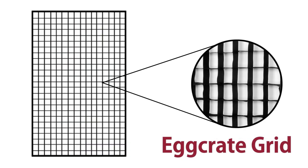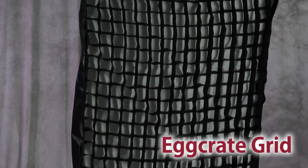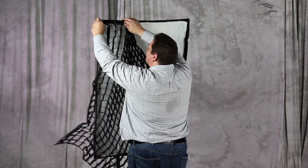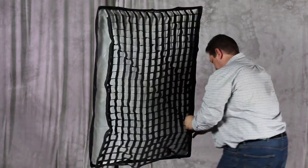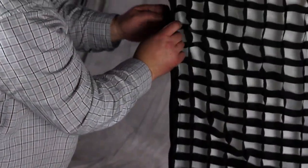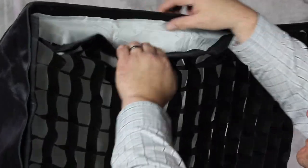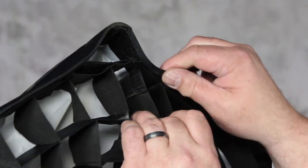PhotoDiox egg crate grids are a useful addition to your softbox, giving you further control of your light. To add one, simply unfold it and attach it to the Velcro rim around the inside edge of the softbox. To remove the egg crate grid, carefully pull from its Velcro edge. If you pull from anywhere else on the grid, you may rip it.